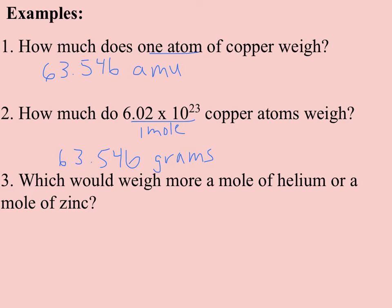Which would weigh more, a mole of helium or a mole of zinc? Well, if I look at the periodic table, I see that helium has a molar mass of 4.003 grams per mole of helium. And when I look at zinc, I see that zinc weighs 65.39 grams per mole of zinc, so obviously zinc weighs more.